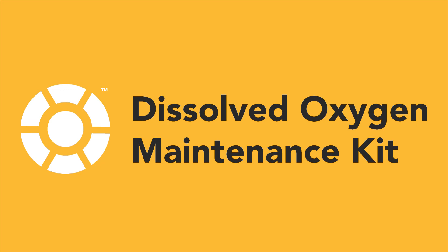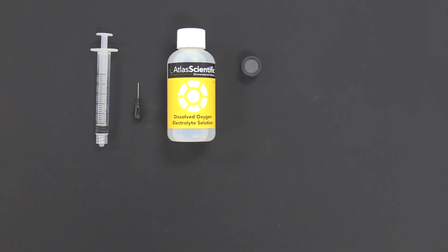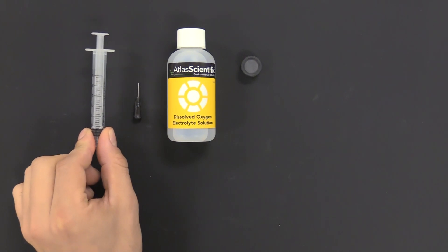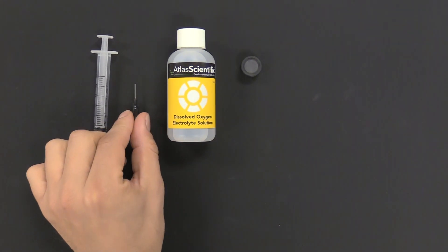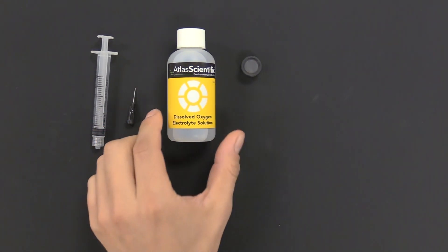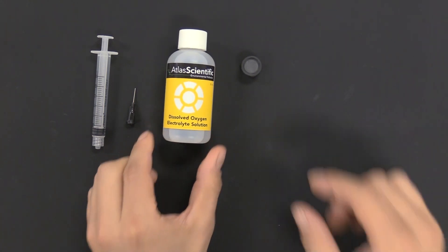To recondition the probe, you need the dissolved oxygen maintenance kit. It comes with four items: a syringe, a blunt tip needle, the electrolyte solution, and a replacement membrane.